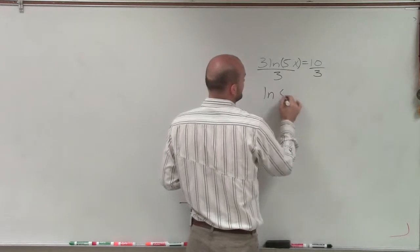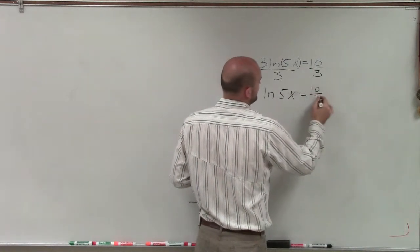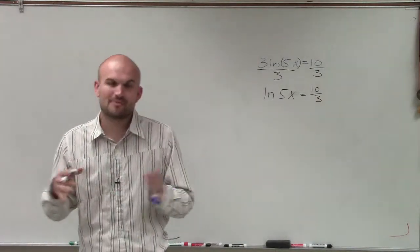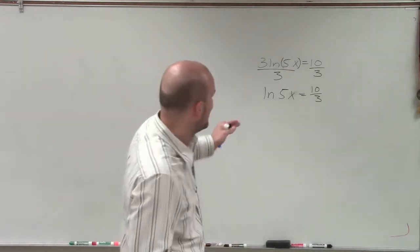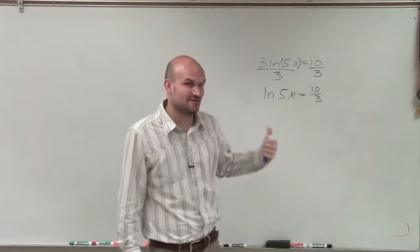So I have ln of 5x equals 10 thirds. Now, since 10 thirds is going to be a repeating number, I'm just going to keep that as a fractional base.